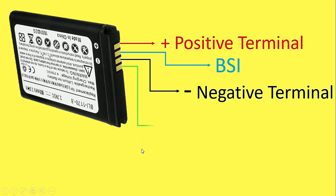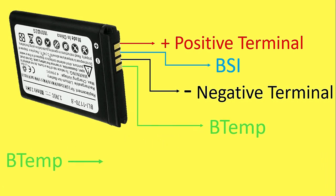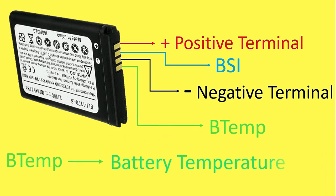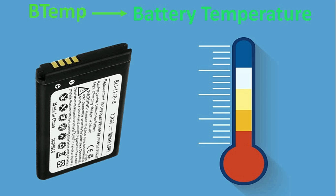The last fourth terminal is known as the B-Temp terminal. The full form of B-Temp is Battery Temperature. As we can get from the name, this terminal is designed to sense the temperature of the battery. This raises the question: how does it send the temperature information?